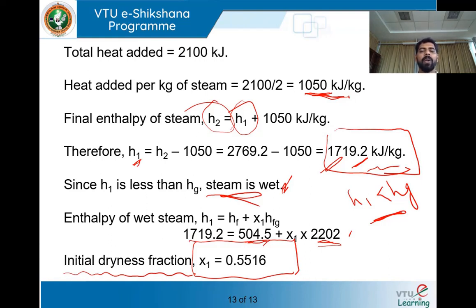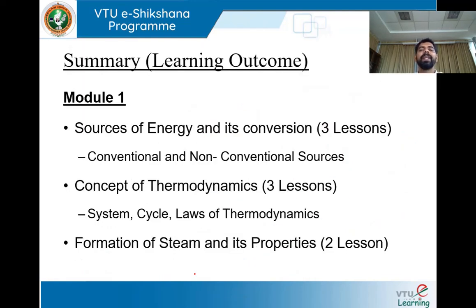Like this, we can solve various numericals pertaining to finding enthalpy of wet steam, condition of steam, or dryness fraction. If heat is added or lost, we determine the change in condition of steam and corresponding properties. If it remains wet steam, we find the dryness fraction x. If it becomes superheated steam, we find the superheated temperature. These are the few numericals solved using the concept of steam formation at constant pressure and properties of steam. With this, we have come to the end of module 1.